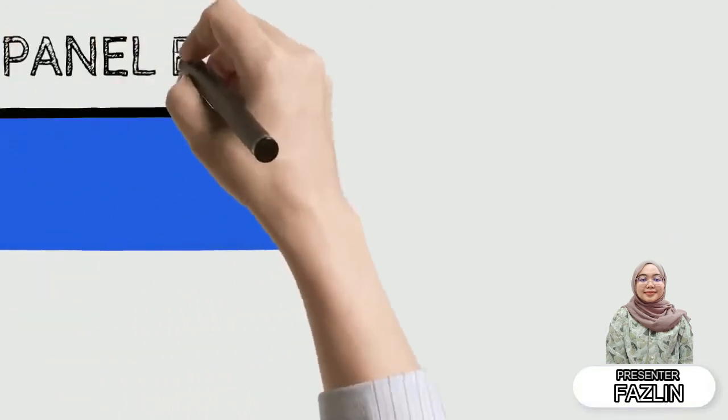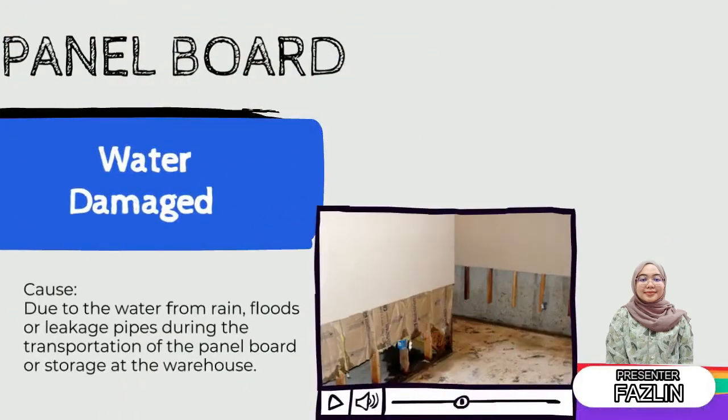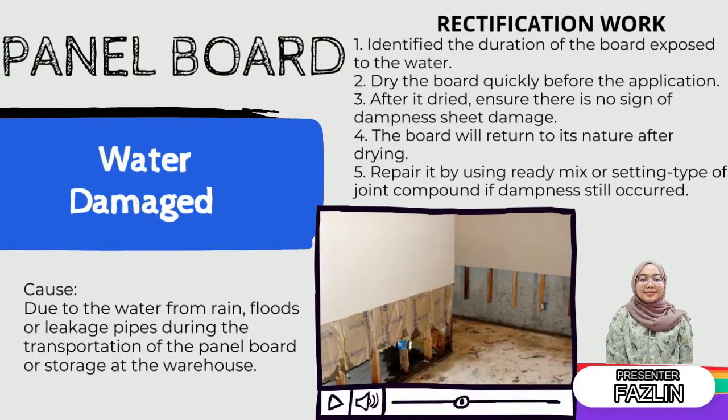The second defect is on the panel board: water damage. The reason for this defect is due to water from rain, flood, or a leaking pipe during transportation of the panel board or storage at the warehouse. The rectification work: first, identify the duration the board was exposed to water; dry the board quickly before application; after drying, ensure there is no sign of dampness or sheet damage. The board will return to its natural state after drying. Repair using ready-mix or setting type joint compound if dampness still occurs.